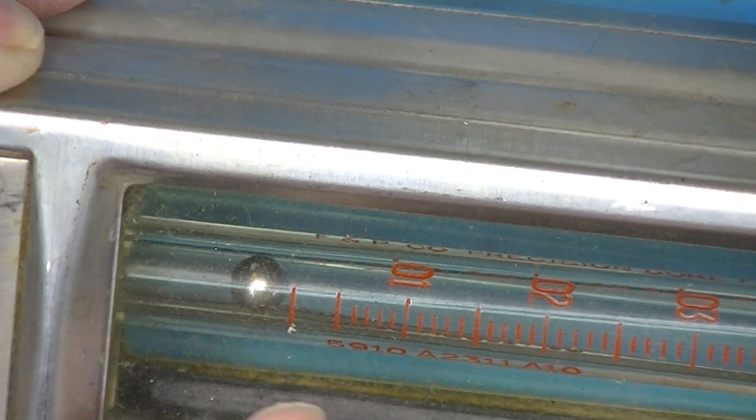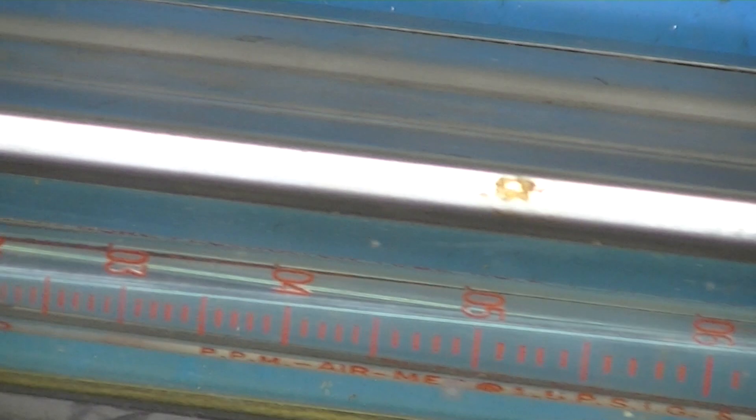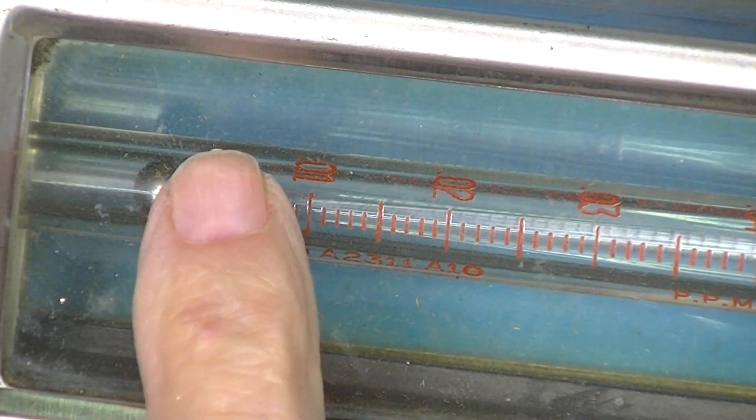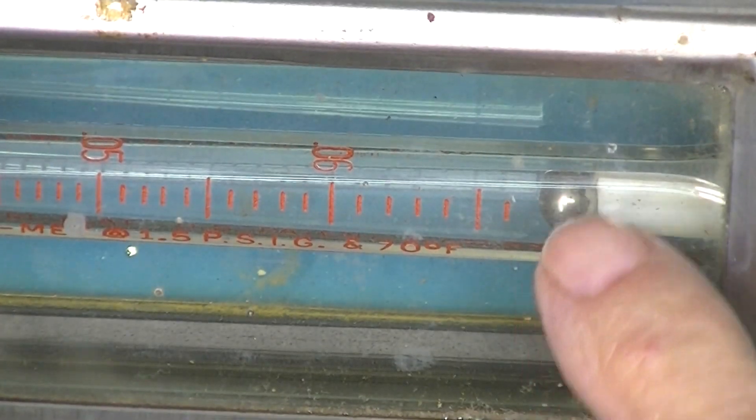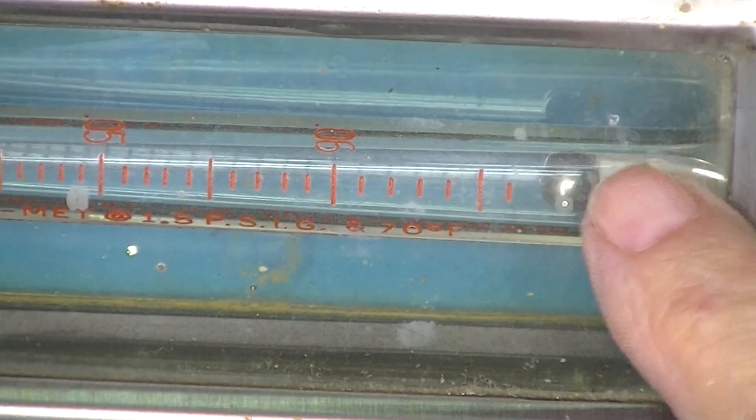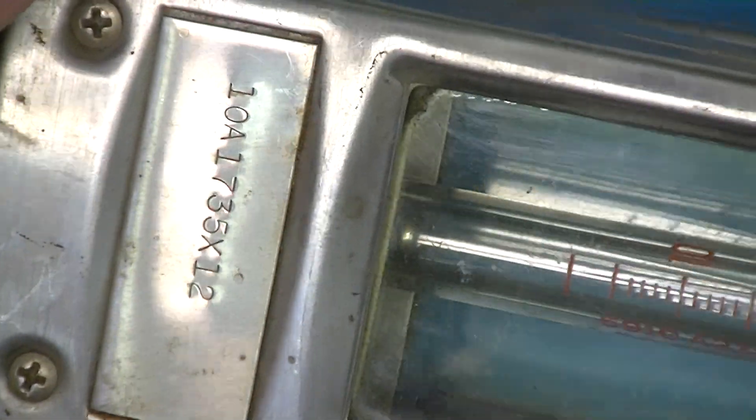The scale goes up to point zero seven. You can see zero one, zero two, and you can see the diameter obviously increasing. Get the ball unstuck. There we go. You can see the diameter compared to the ball, considerably larger at the top than at the bottom.